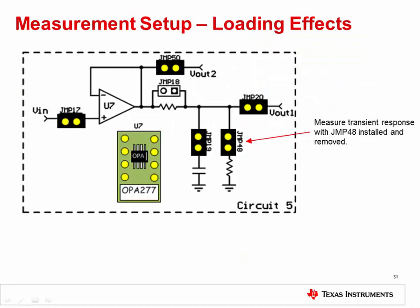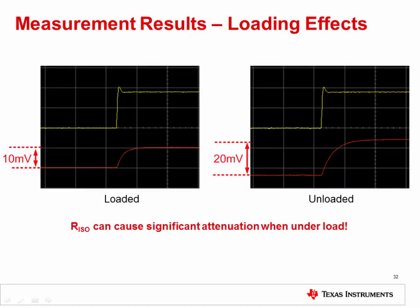As an additional experiment, measure the transient response again with JMP48 installed and removed. This will connect and disconnect the 1K load resistor from the circuit. As you can see, the load voltage changes dramatically if the circuit is loaded or unloaded. In fact, when loaded, the circuit with RISO shows attenuation of approximately 50%. This is simply due to the voltage divider effect of RISO and the load resistance.